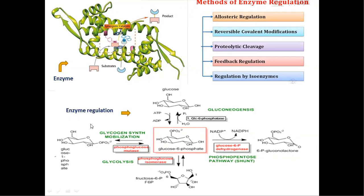Why are they called rate-limiting enzymes? Because these enzymes will be controlling the rate of the reaction. Here we can see four important regulatory enzymes which will be controlling four important metabolic processes.